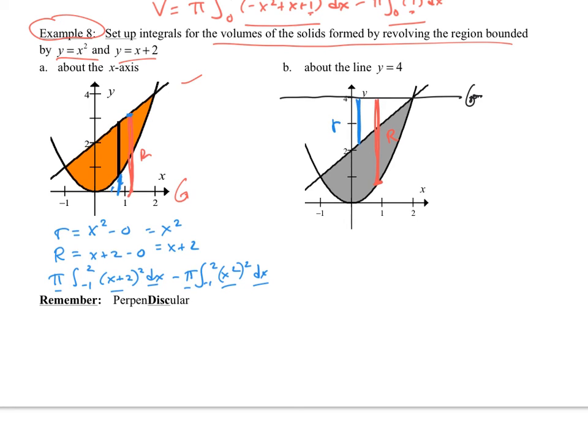Top minus bottom. So big r is going to be four minus my curve. My curve is x squared. Then I have little r, which would be the top, minus the x plus two. Don't forget to cover that up.